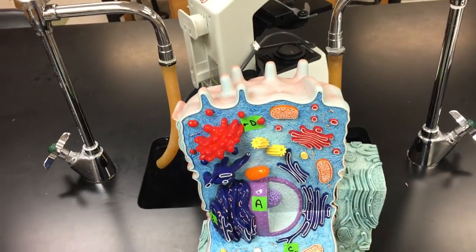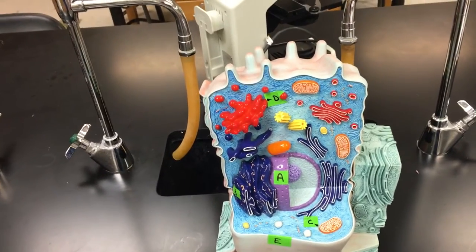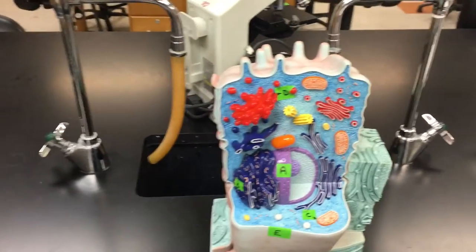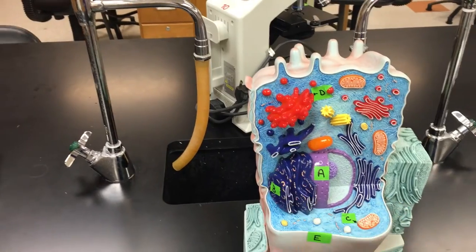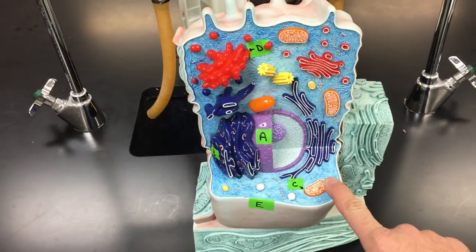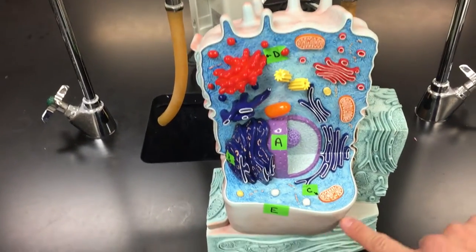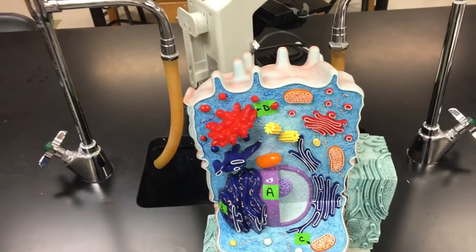A is the nucleus or nuclear envelope. B was rough endoplasmic reticulum. C was a mitochondrion. Mitochondria was okay as well. D was the Golgi apparatus, and then E was the cell or the plasma membrane.